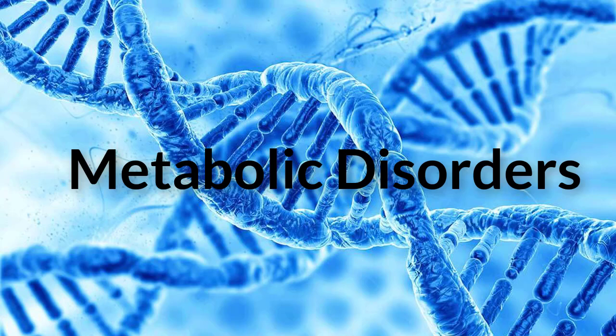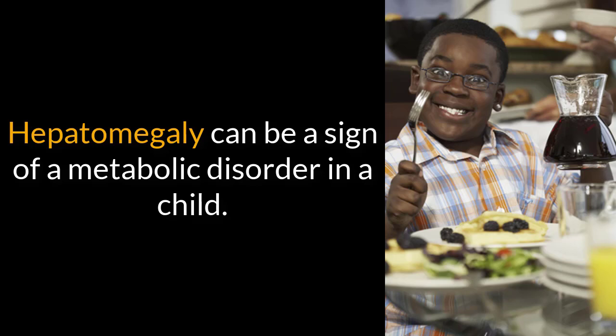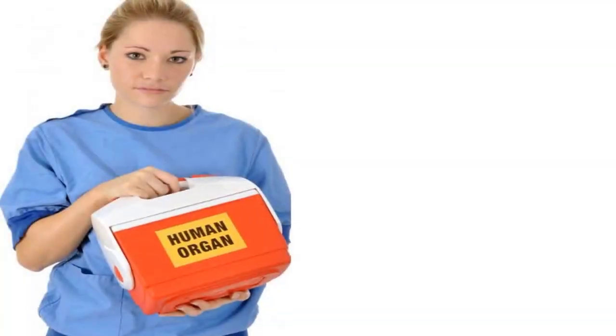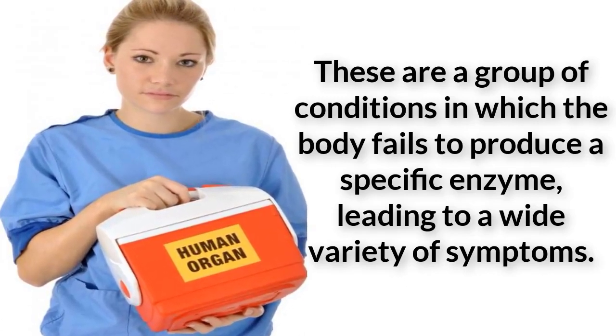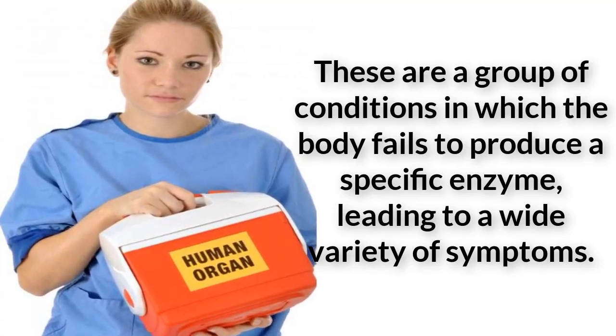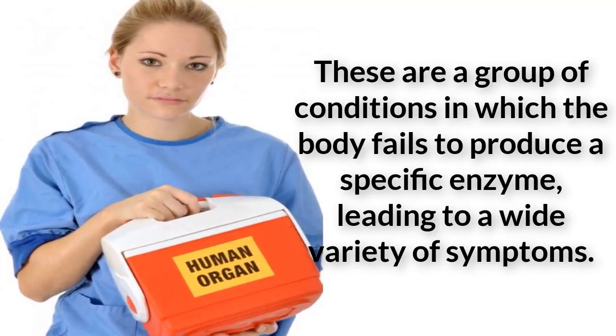Metabolic disorders. Hepatomegaly can be a sign of a metabolic disorder in a child. These are a group of conditions in which the body fails to produce a specific enzyme, leading to a wide variety of symptoms. For example, according to the website Genetics Home Reference, tyrosinemia is a condition in which the body fails to produce an enzyme that breaks down tyrosine, an important component of certain proteins. This breakdown process takes place in the liver. As a result of this failure, tyrosine builds up in the liver, causing liver enlargement, among other symptoms.